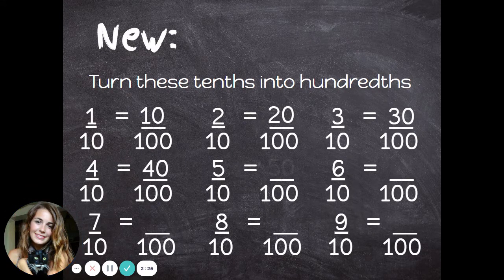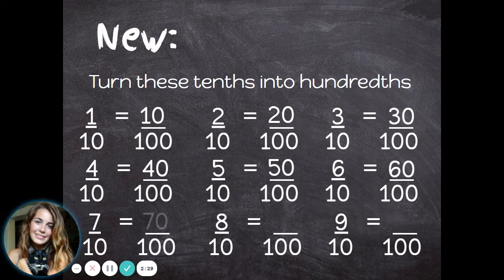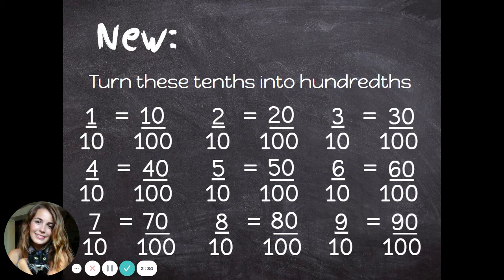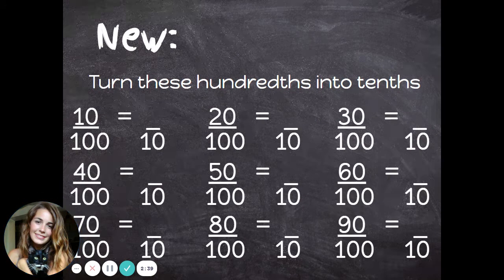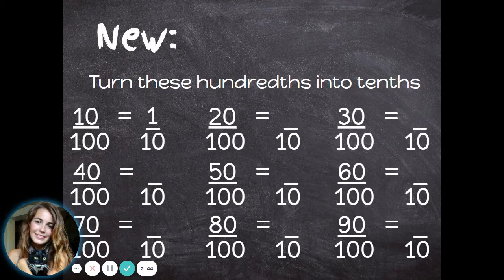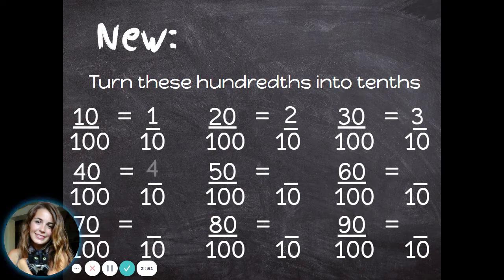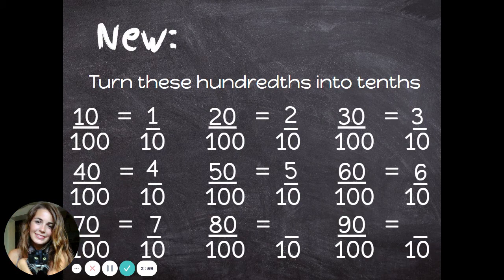Are you noticing a pattern? Each time, I'm just adding a zero onto the end of the number. We can go the other way as well. Now let's try turning hundredths into tenths. Ten-hundredths equals one-tenth. Twenty-hundredths equals two-tenths. Thirty-hundredths equals three-tenths. This time, I'm just dividing by ten, or taking a zero away from each number, to change hundredths into tenths.